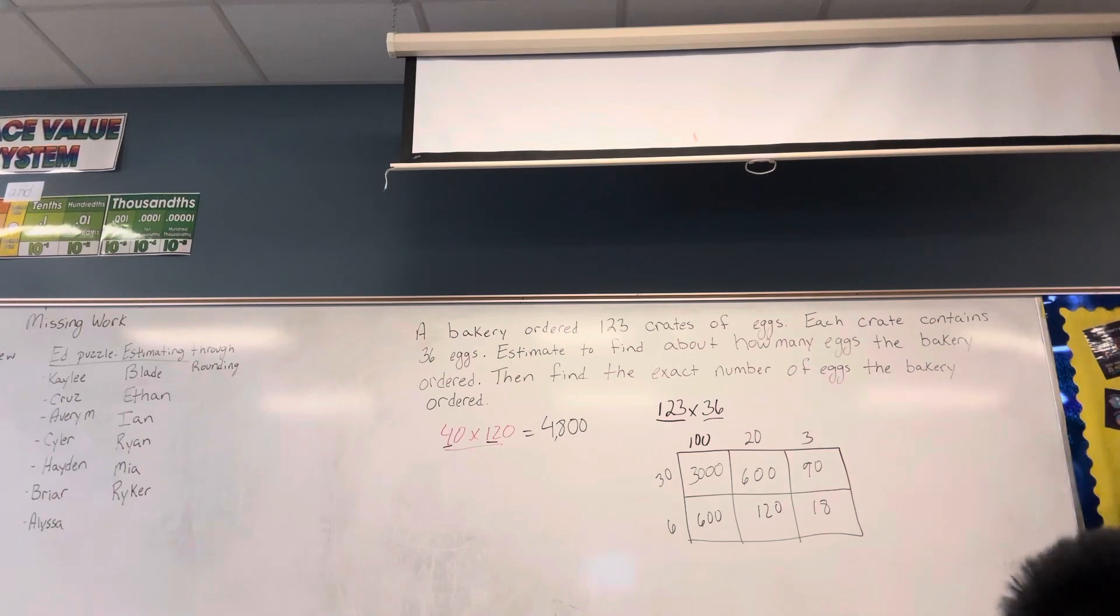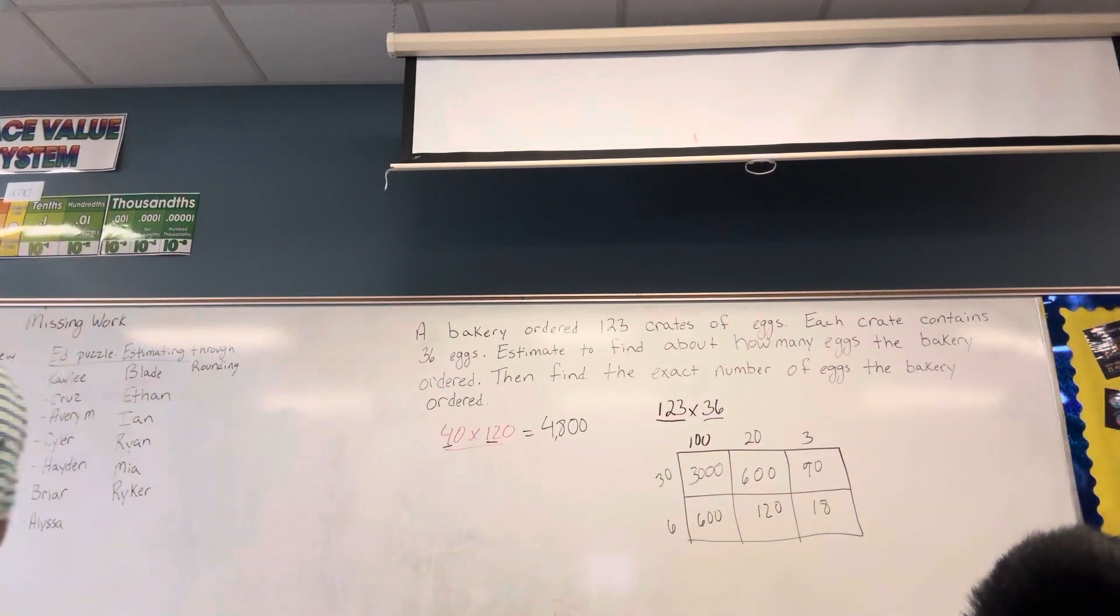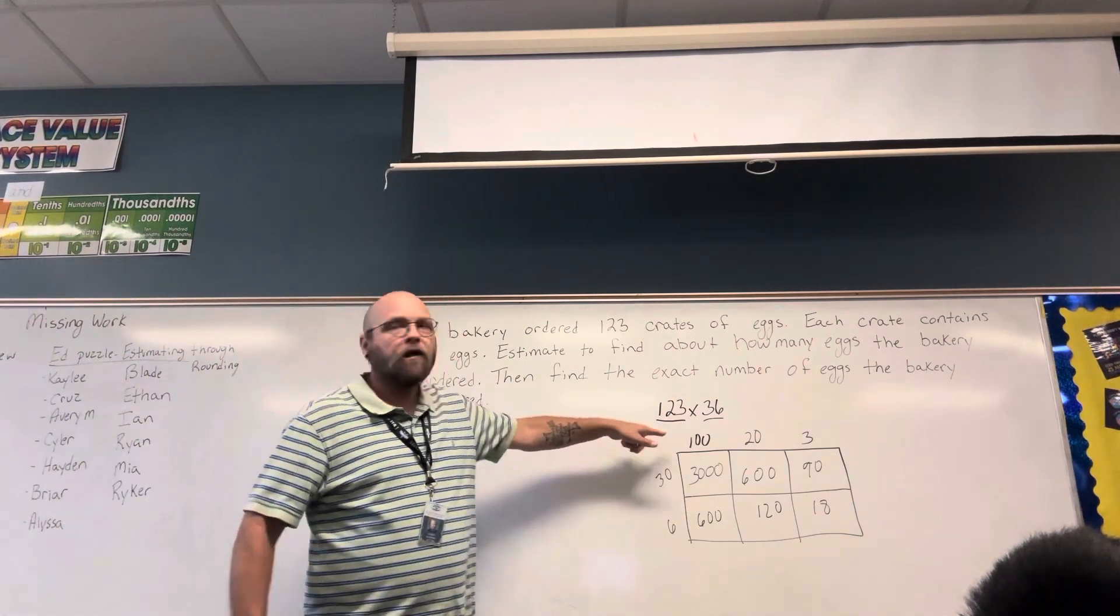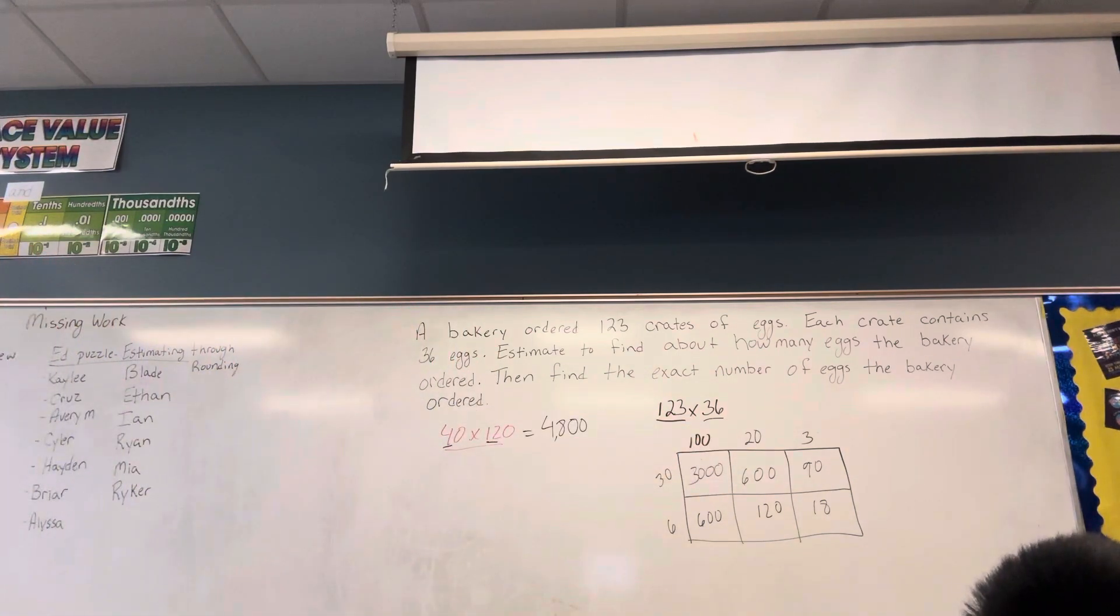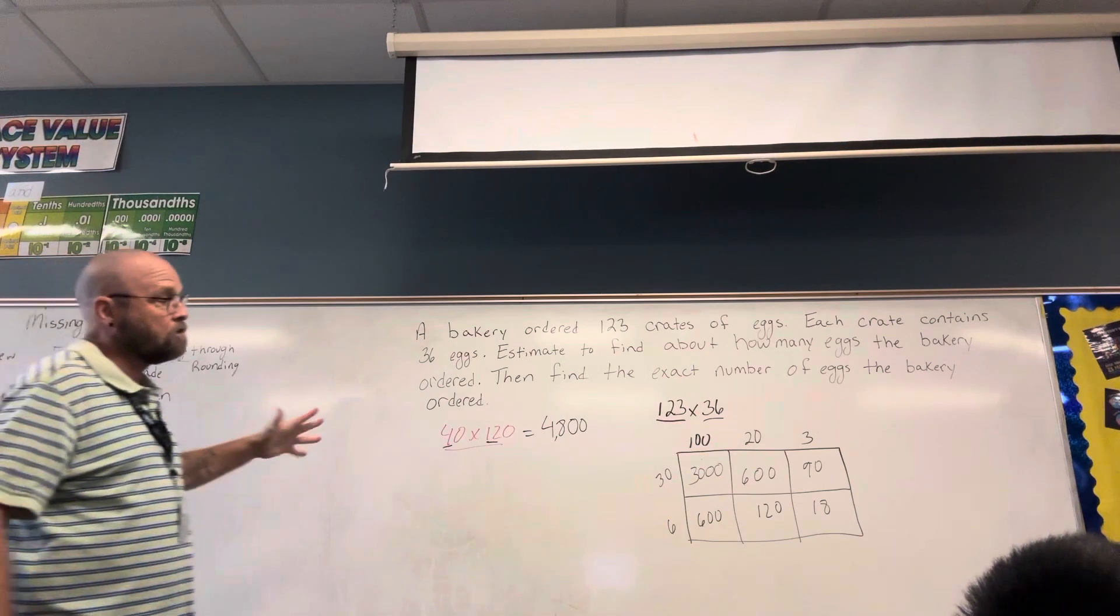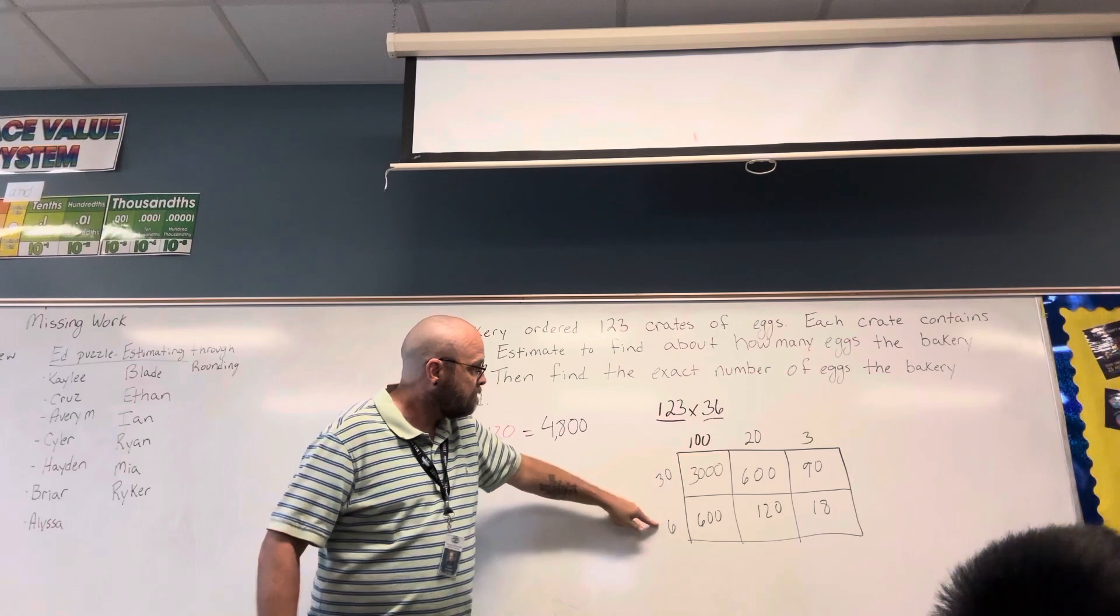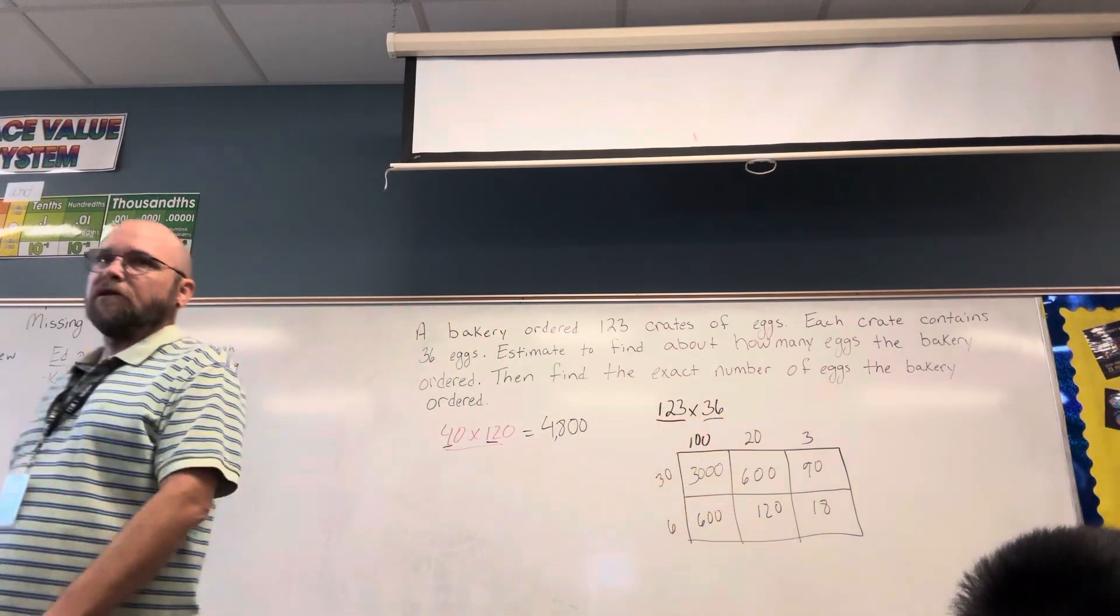Now this makes it very easy to multiply and get the correct product. Because all I had to do is take 123 and make it 100 plus 20 plus 3, take 36 and make it 30 plus 6, do the multiplication just like a multiplication chart, and then I would add all the numbers that are inside the boxes.